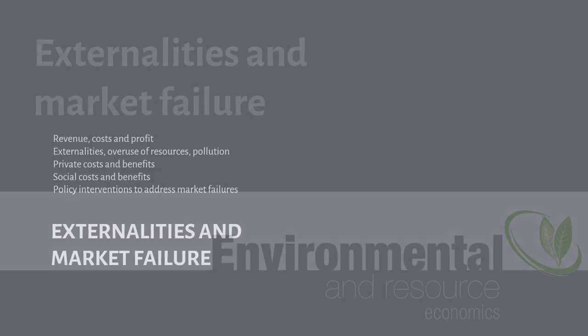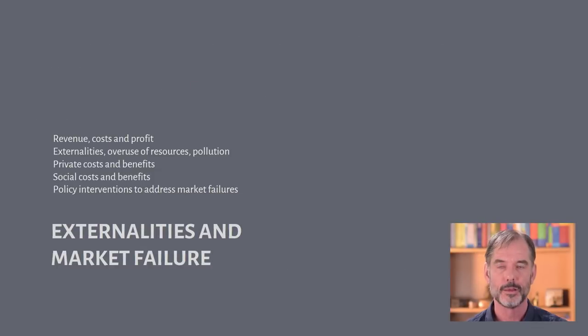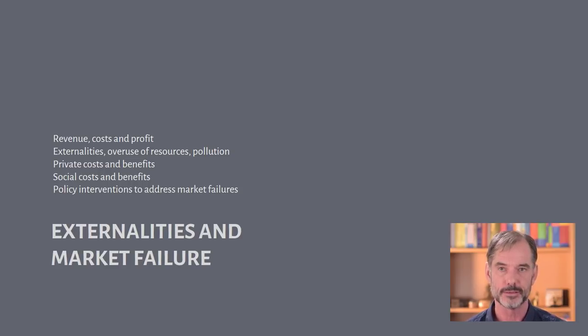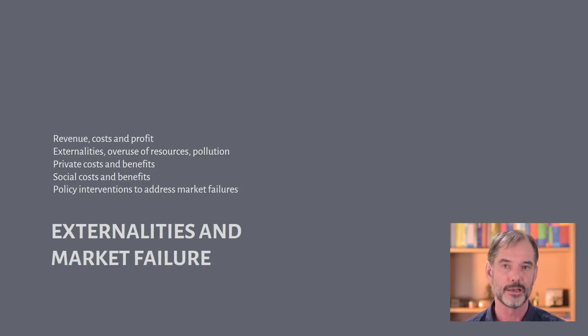In this environmental and resource economics video, I'll be talking about externalities and market failure. I'll start by covering revenue, costs, and profit, then get into externalities — explaining what those are in relation to overuse of resources and pollution — and that will relate to private costs and benefits versus social costs and benefits. I'll finish by talking about policy interventions to address market failures.